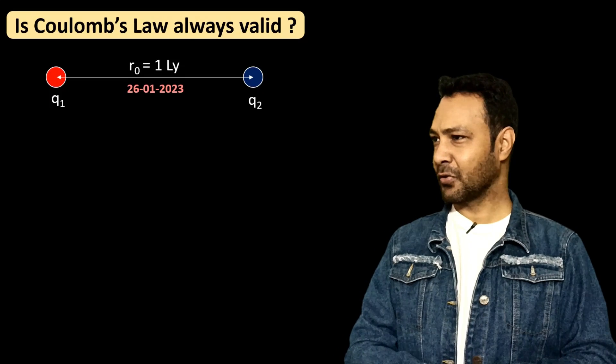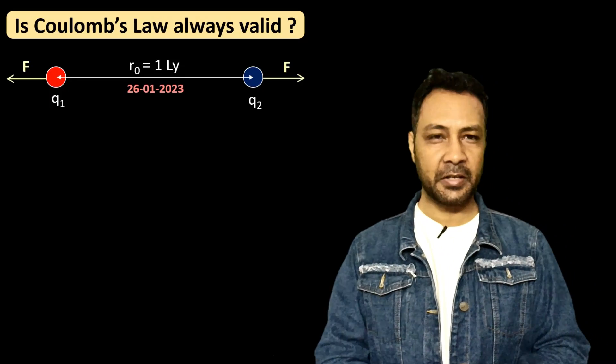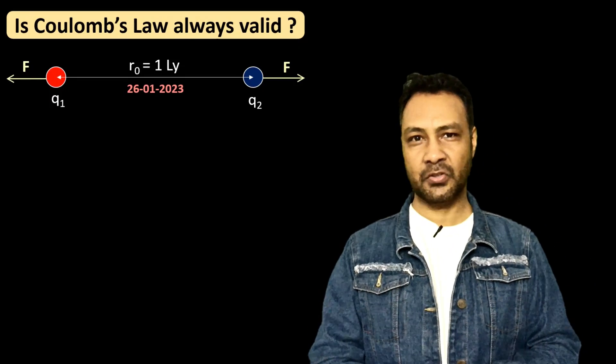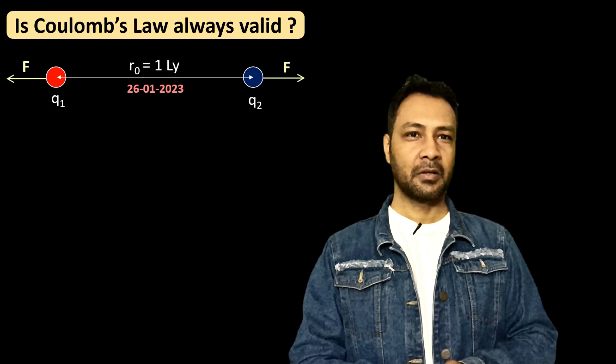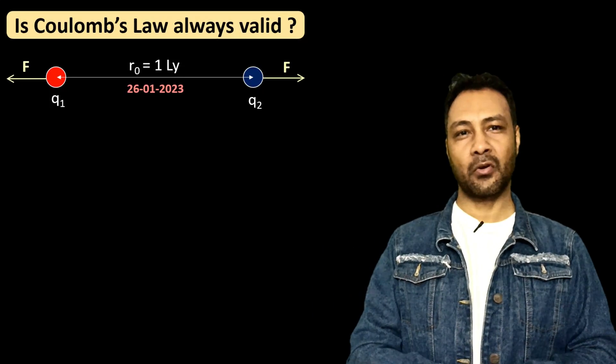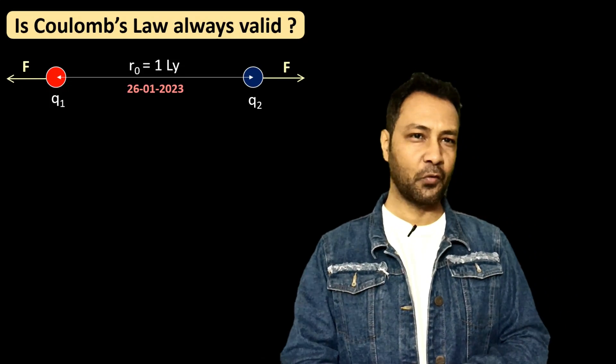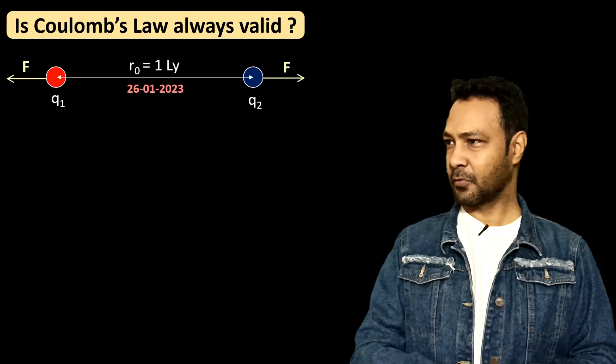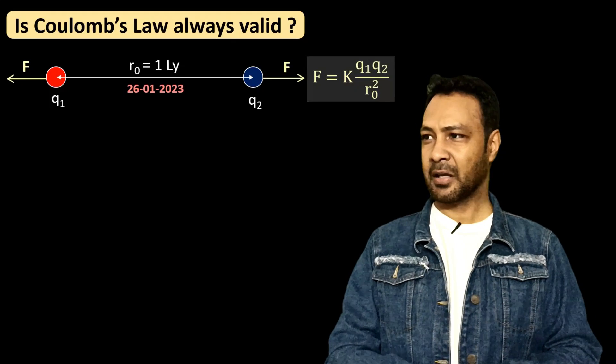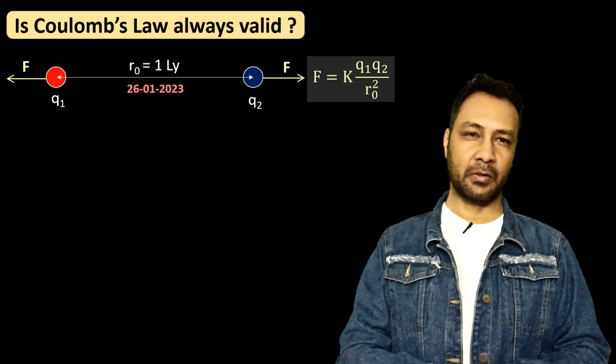they exert force on each other and say the magnitude of force is F and that is 1/(4π ε₀) q1 q2 by r². In place of 1/(4π ε₀) let me write k. So the magnitude of force is k q1 q2 by r₀².